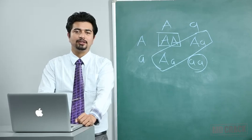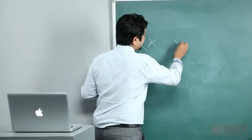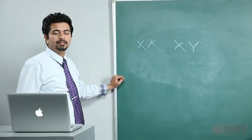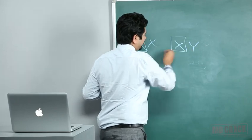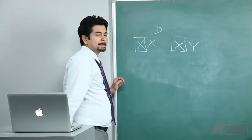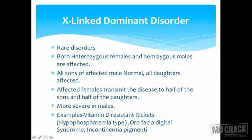X-linked dominant disorder is very rare — described mainly for academic interest. Both heterozygous females and hemizygous males are affected. Since it is dominant, the disease manifests whenever the X-linked dominant allele is present. All sons of an affected male are normal because the father passes his Y chromosome to sons, not his X chromosome. All daughters of an affected male are affected because the father's X chromosome carries the dominant trait.